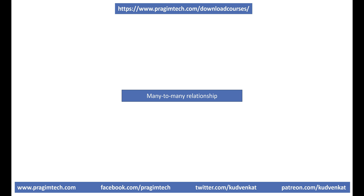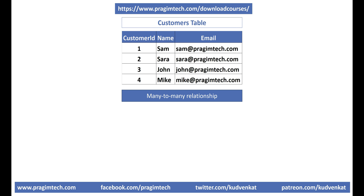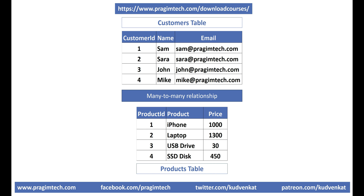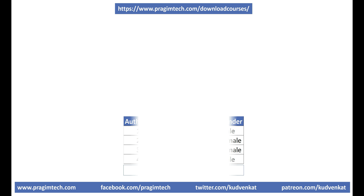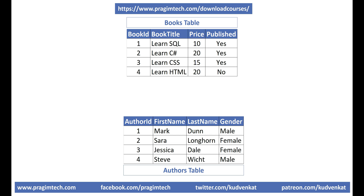A common real world use case for this is when you have a many-to-many relationship between two tables — that is, when multiple rows in one table are associated with multiple rows in another table. For example, there is a many-to-many relationship between customers and products tables because a customer can purchase many products and a product like an iPhone can be purchased by many customers. Another example is authors and books: a single author can write many books and a given book can be authored by multiple authors.